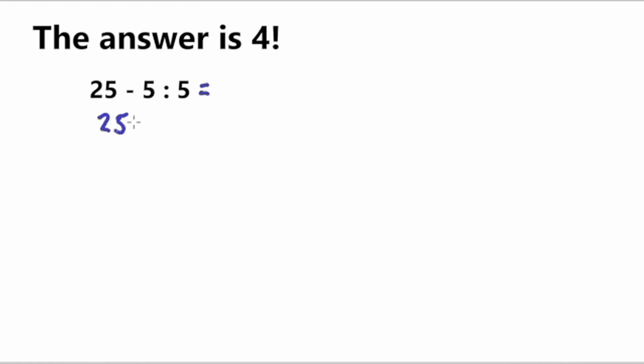So let's do the division first. We'll have 25 minus 5 divided by 5. What is 5 divided by 5? That is 1. So 25 minus 1 is what? That is 24. So the correct answer that we got is 24.